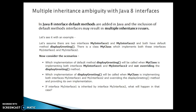Multiple inheritance ambiguity with Java 8 interfaces. In Java 8, default methods were added to interfaces, and the inclusion of default methods in interfaces may result in multiple inheritance issues. Let's see with an example: assume there are two interfaces, my interface one and my interface two, and both have a default method called display greeting.